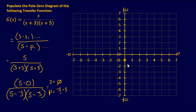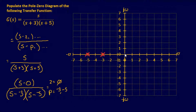Now we can plot this on the s-plane. The poles at negative three and negative five are real numbers, so they go on the real axis and are marked with x's. The zero at zero is marked with a circle. It's a very simple problem — all we do is take the transfer function, identify our zeros and poles, and plot them on the pole-zero diagram.